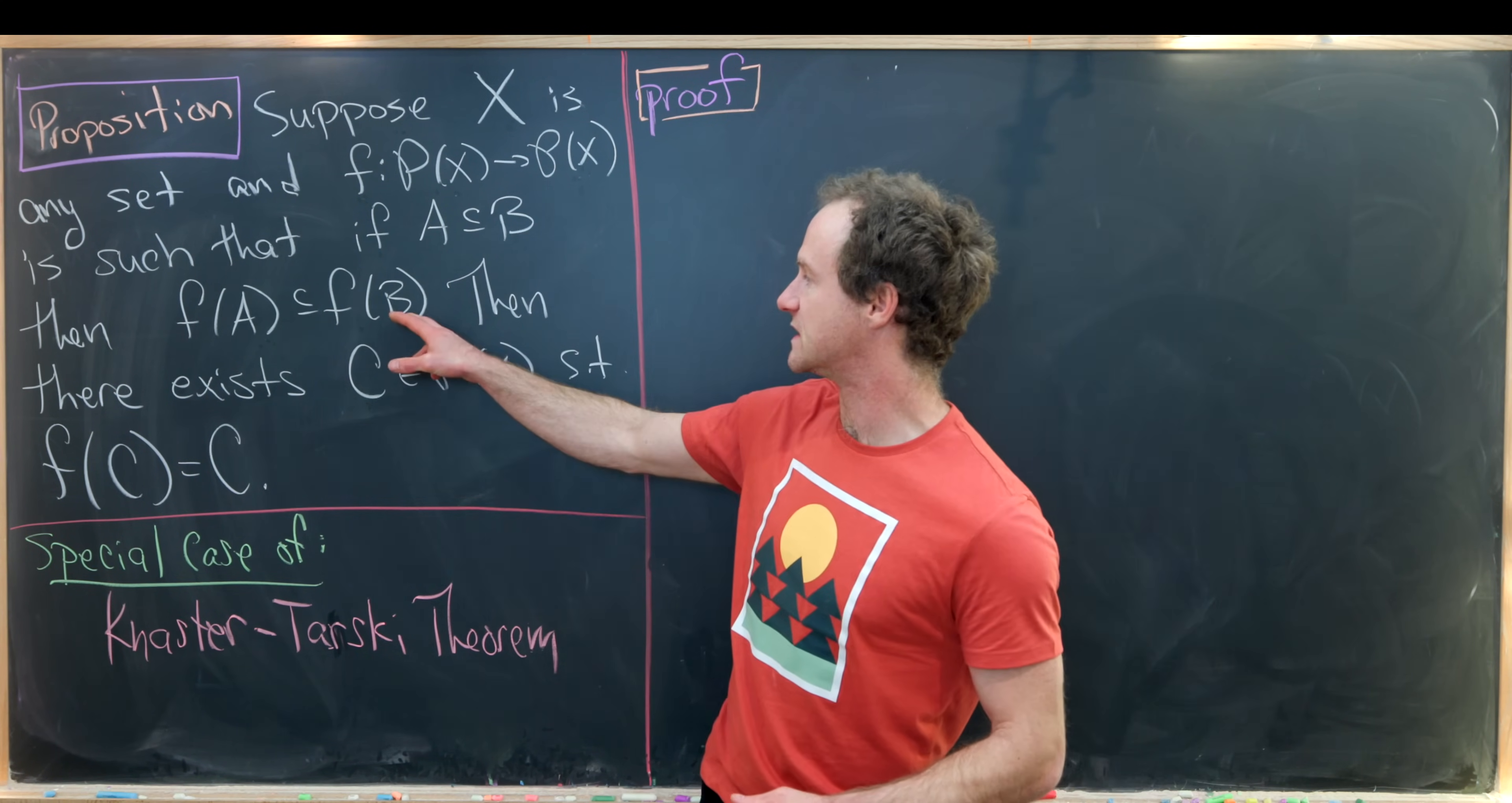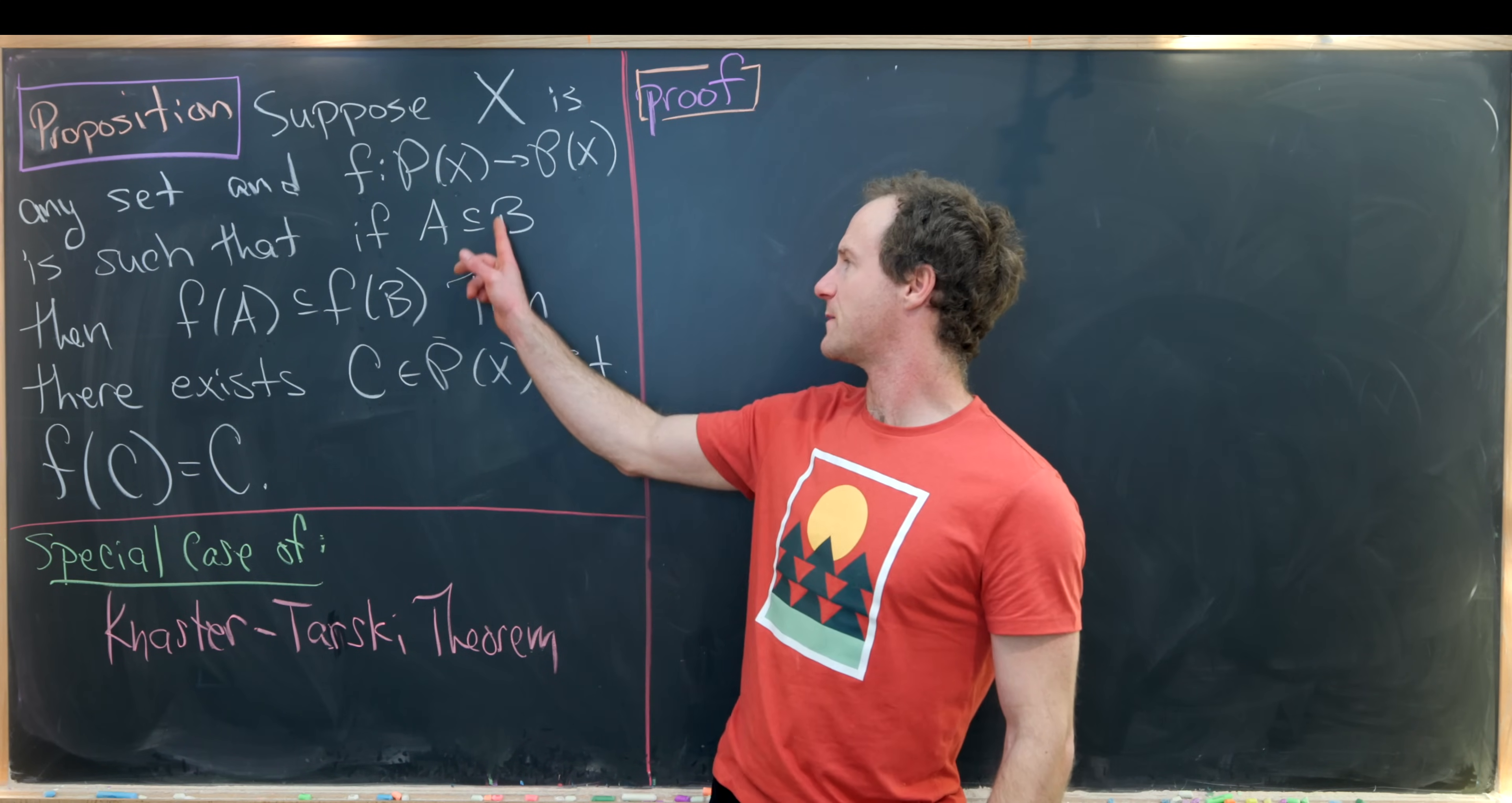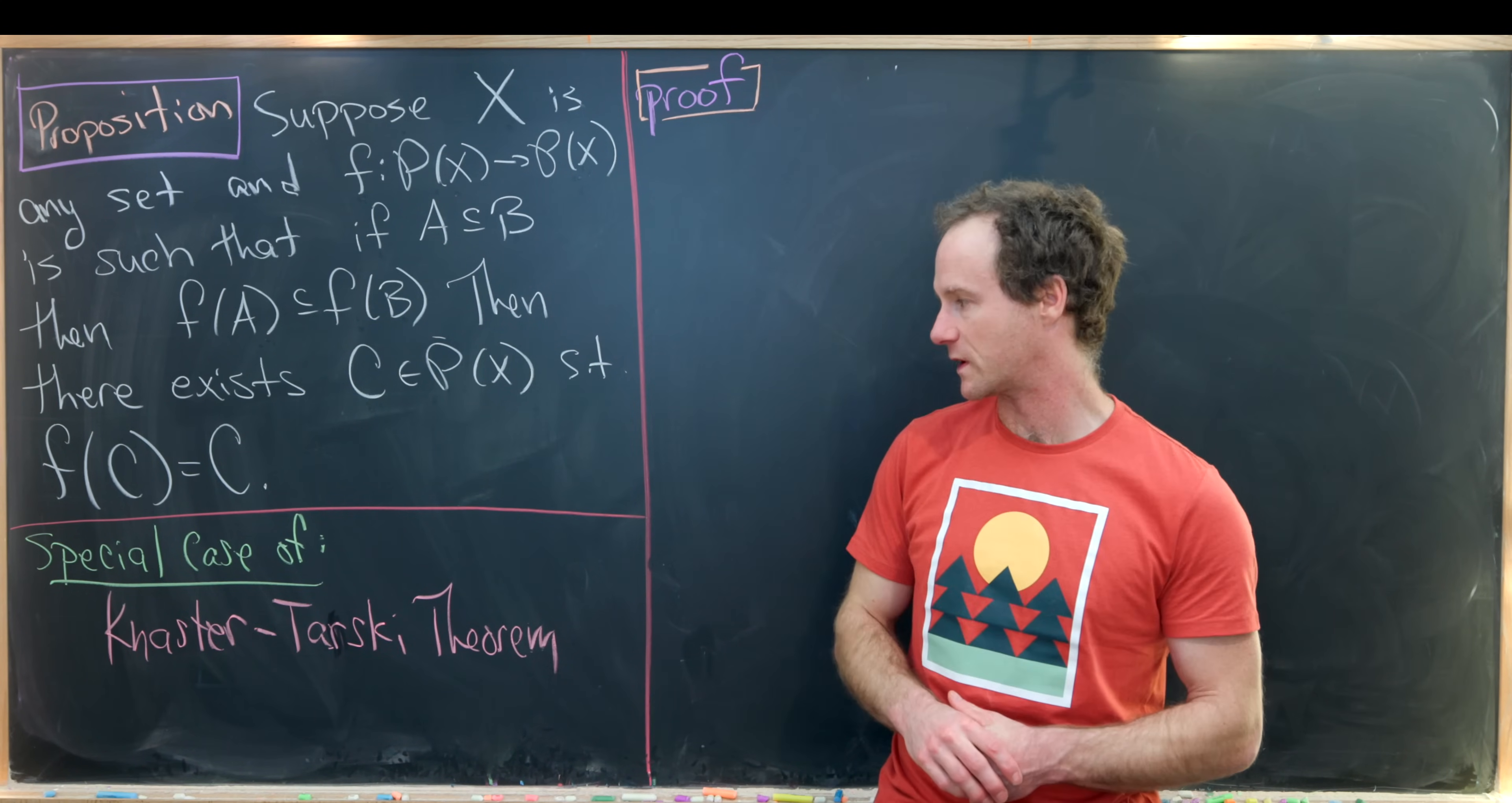Now let's look at this condition. This is like an increasing type condition on the set of subsets. So we can think about this containment as being some sort of ordering. So f maintains that ordering. And then this f of c equals c is like having a fixed point.